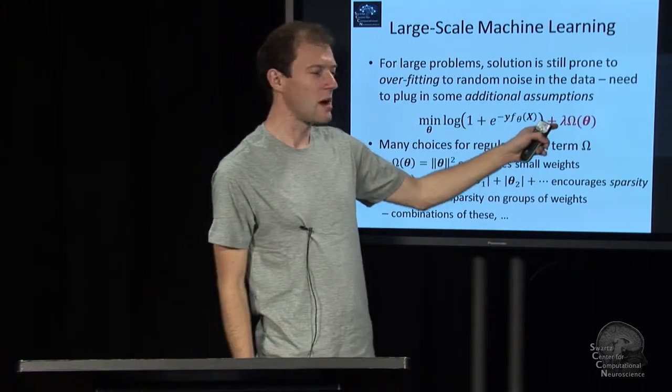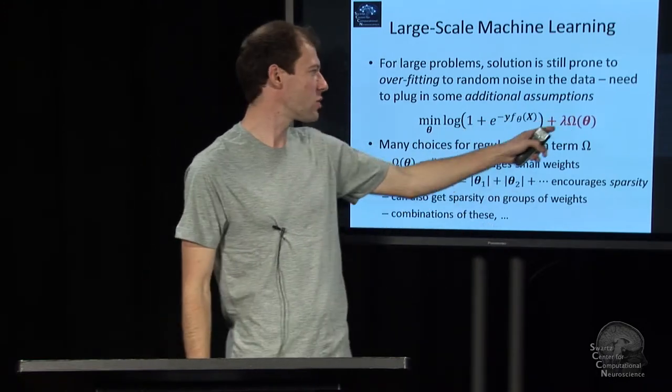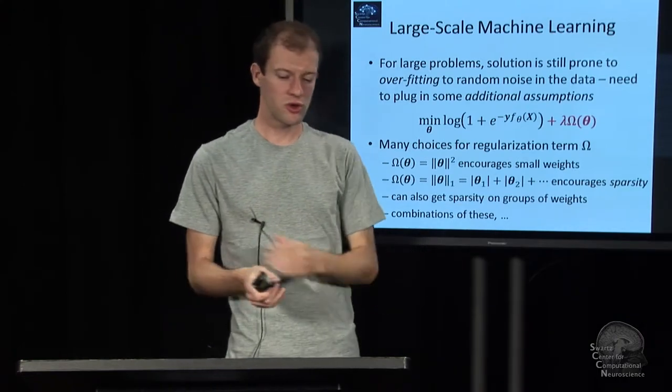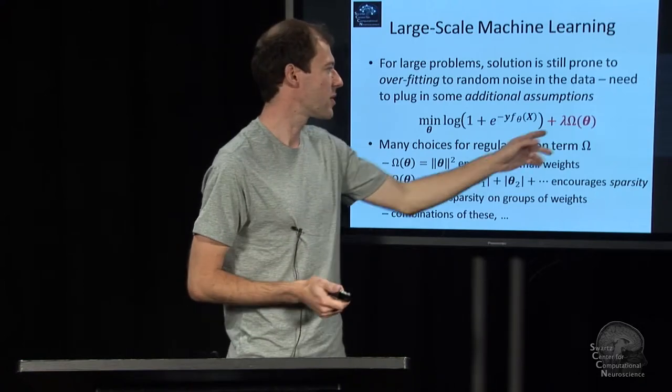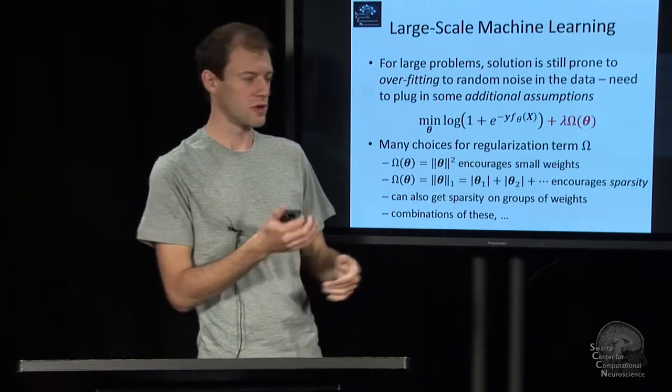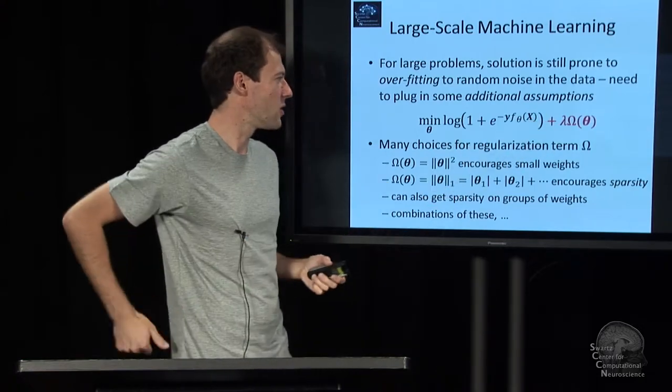And typically you want to, you don't necessarily know how much you have to trade this off versus the data term. This is the regularization term. This is the data term. And so you have a parameter, regularization parameter. It's just a number, lambda, that you can search over. You can use cross-validation and parameter search to find the right setting. That's very straightforward. You just write a bunch of values and see how well it works.